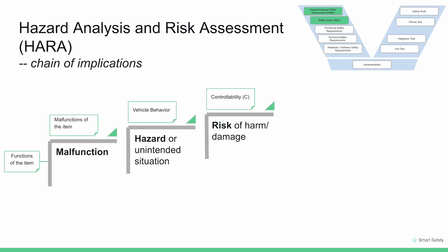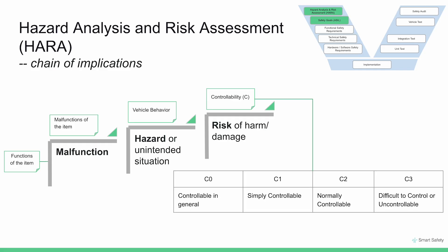The third parameter is controllability. The controllability of each hazardous event by the driver or other persons involved in the operational situation shall be estimated based on a defined rationale for each hazardous event. Controllability is assigned to one of the classes: C0, C1, C2, or C3, where C0 means the situation is controllable in general and C3 means the situation is difficult or impossible to control. The evaluation of controllability is an estimate of the probability that someone is able to gain sufficient control of the hazardous event to avoid specific harm. It is also assumed that the driver is in an appropriate condition to drive — for example, not tired and holding a valid driver's license.